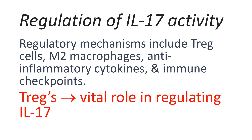These regulatory mechanisms include T-regs, alternatively activated macrophages M2, anti-inflammatory cytokines, and immune checkpoints. T-regs, which are either derived from the thymus or induced in the periphery, play a vital role in regulating T-Helper 17, preventing autoimmunity and immunopathology caused by infection. The co-induction of T-regs at the same time as effector T-cells is critical, and the balance between them can determine the outcome of disease.